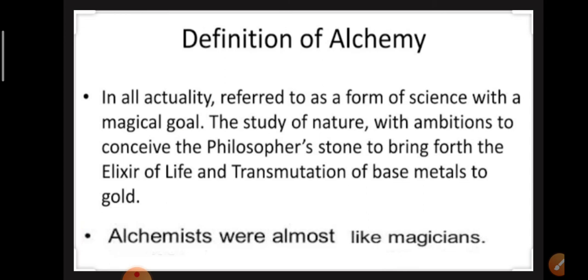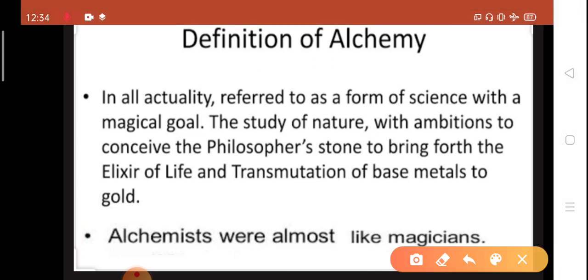Now, what is the definition of alchemy? In actuality, it is referred to as a form of science with a magical goal. It means they did their method in a magical way. The study of nature with ambitions to conceive the philosopher's stone and to bring forth the elixir of life and transmutation of base metals to gold.